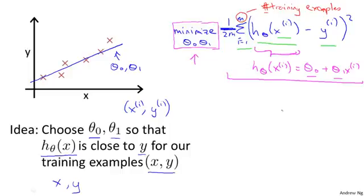So just to recap, we're posing this problem as: find me the values of theta 0 and theta 1, so that the average, or really 1 over 2m times the sum of squared errors between my predictions on the training set minus the actual values of the houses on the training set is minimized. So this is going to be my overall objective function for linear regression.